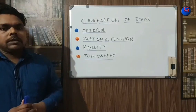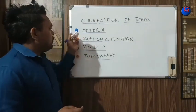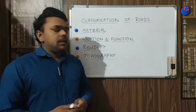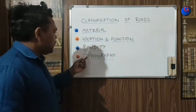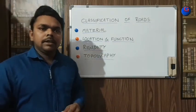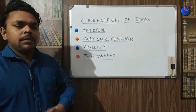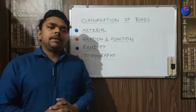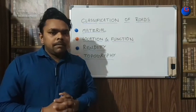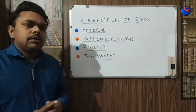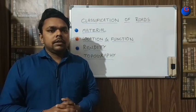Basically there are some factors on which we can classify the roads: number one, material wise; number two, location and function of the road; number three, rigidity of the pavement; and number four is topography. There are also some other factors like traffic-based and cost-wise, but mainly I have taken these four factors.